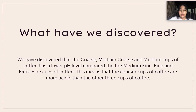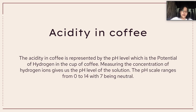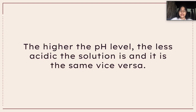What we discovered is that coffees made from coarse, medium coarse, and medium coffee grounds had a lower pH level compared to the medium fine, fine, and extra fine cups of coffee. This means that the coarser cups of coffee are more acidic than the finer cups of coffee. Acidity in coffee is represented by the pH level, which is the potential of hydrogen in the cup of coffee. Measuring the concentration of hydrogen ions gives us the pH level of the solution. The pH scale ranges from 0 to 14, with 7 being neutral and anything below 7 being acidic, which is where coffee falls. The higher the pH level, the less acidic the solution is, and vice versa.